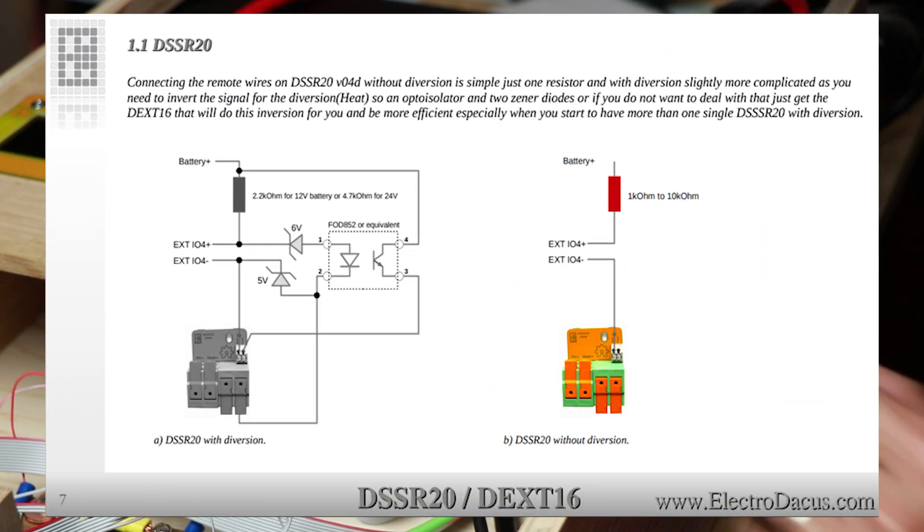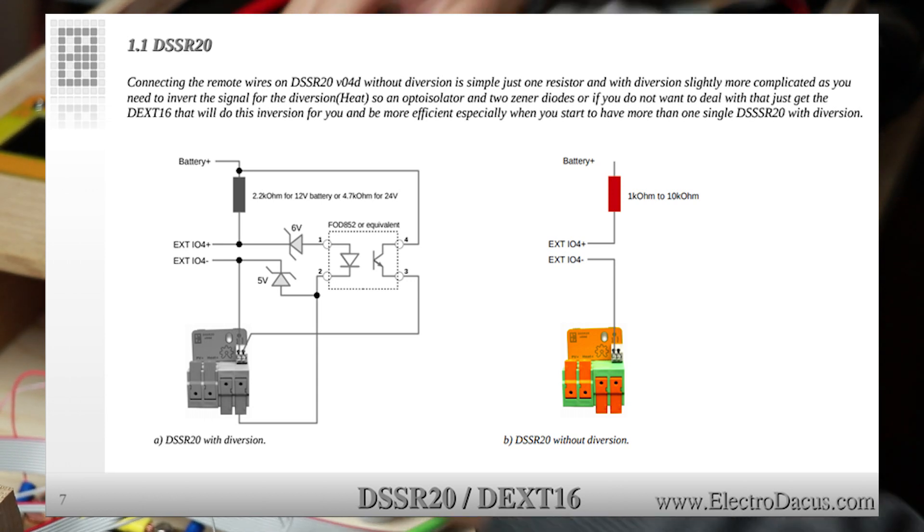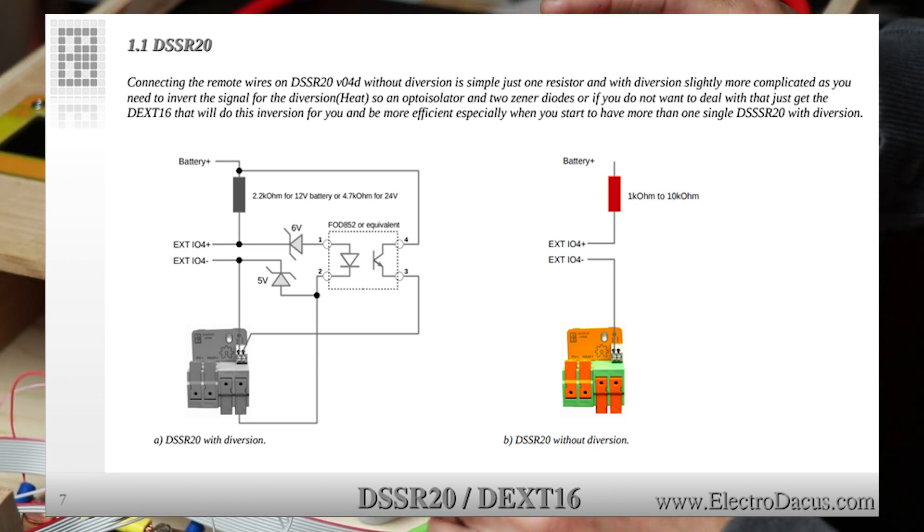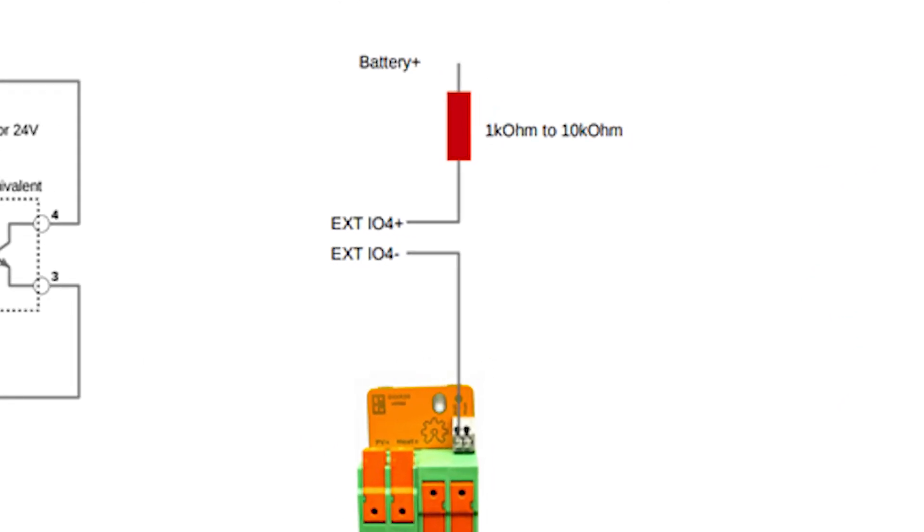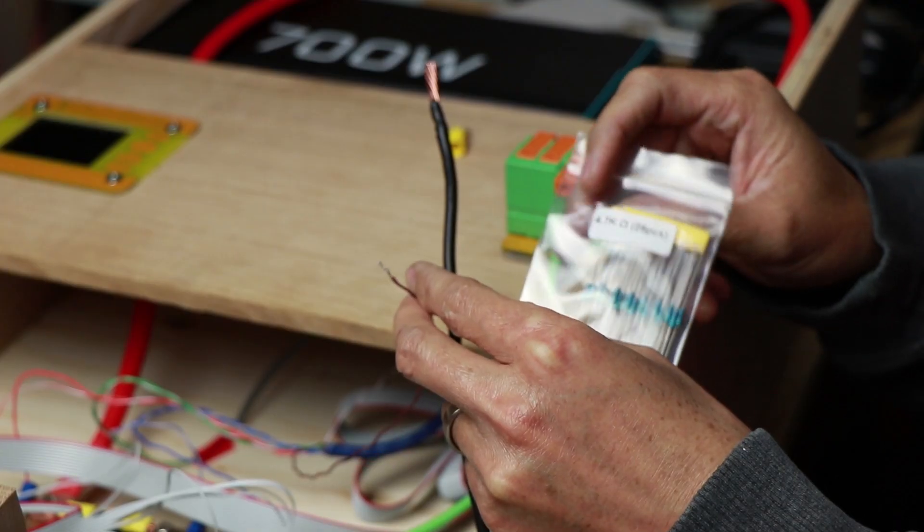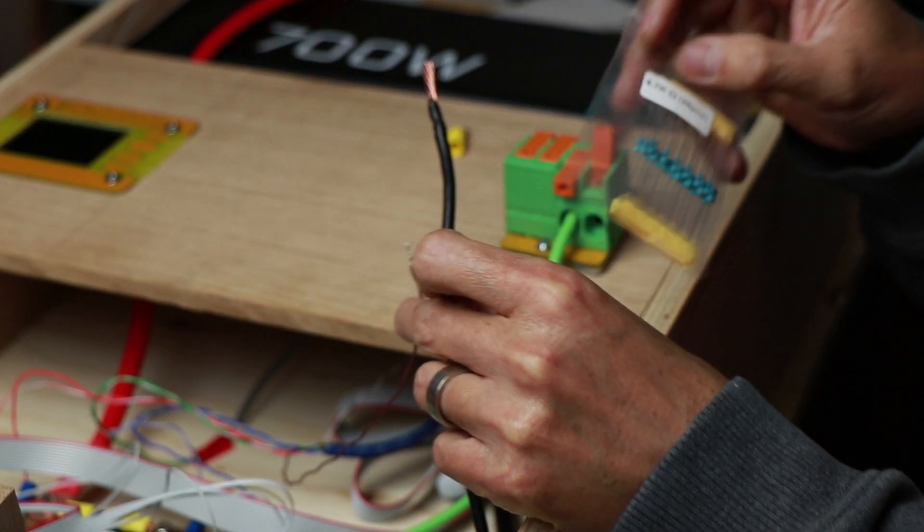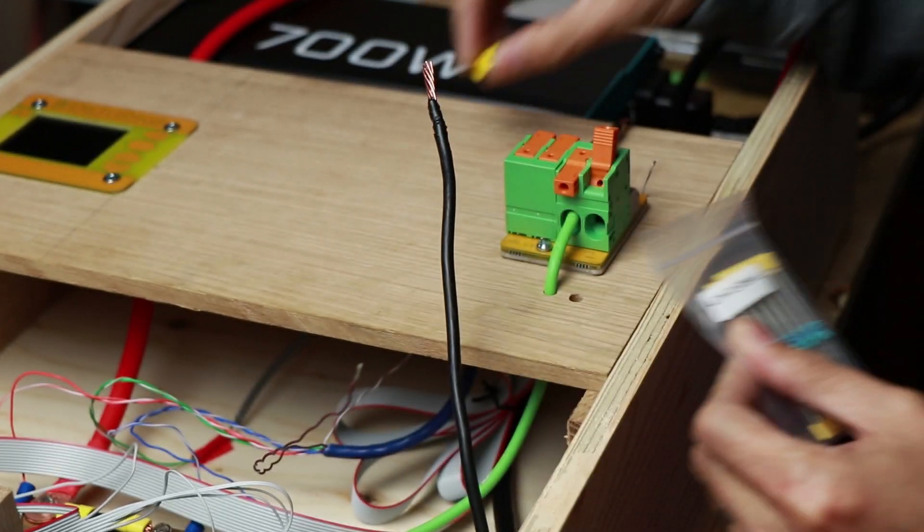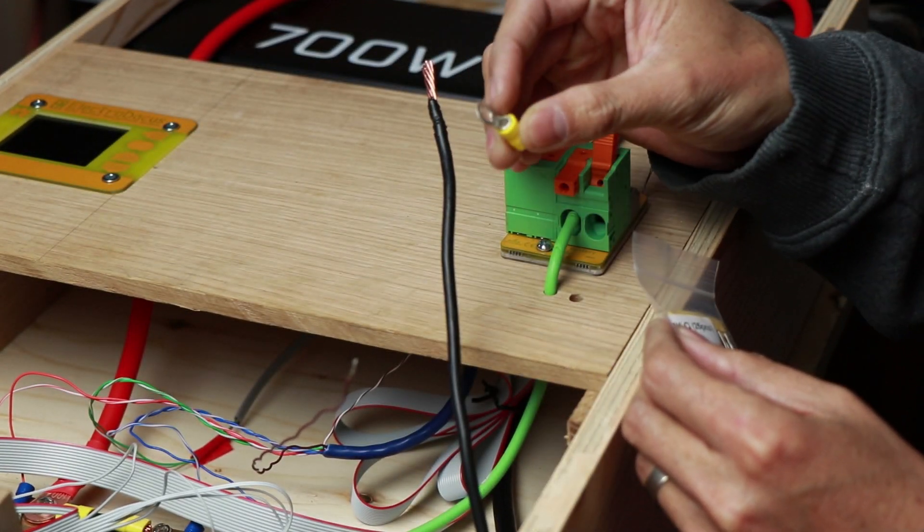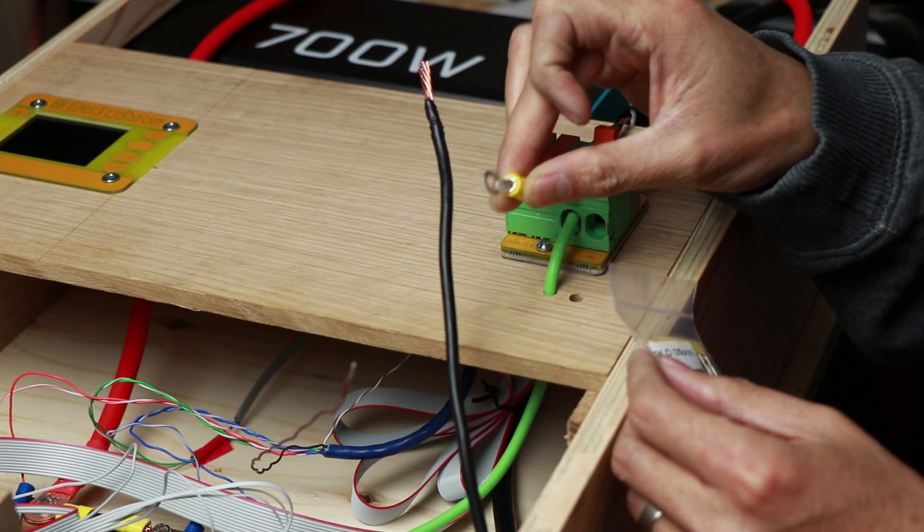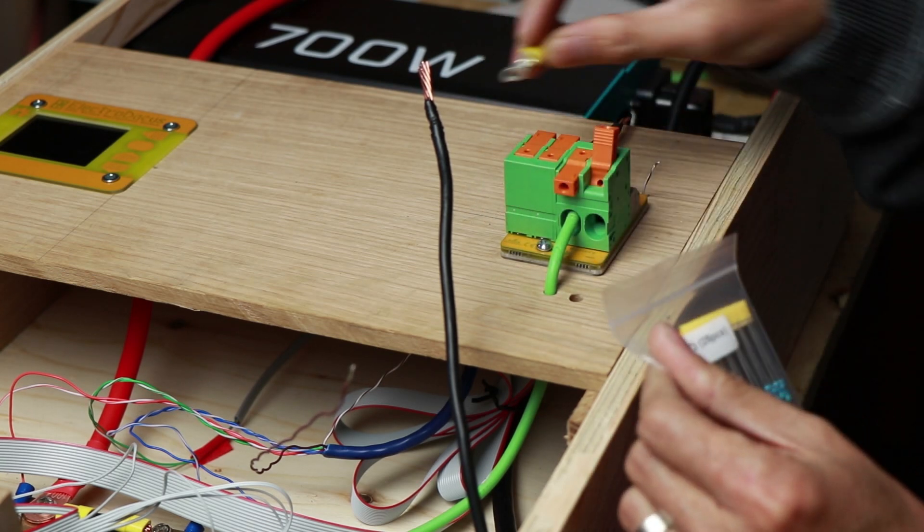So right now, since this is the new version or new model for the DSS-R20, the connection for the EXTIO positive have to have a resistor of 1k ohm or up to 10k ohm. So I have a 4.7 here so this should work perfectly. I'm just gonna solder this and connect it to a ring terminal.